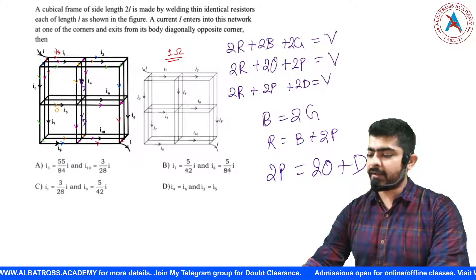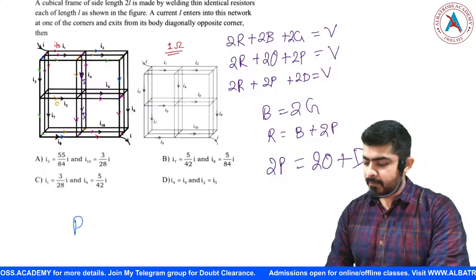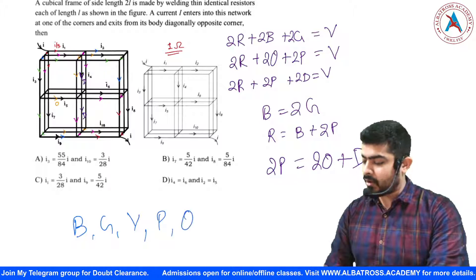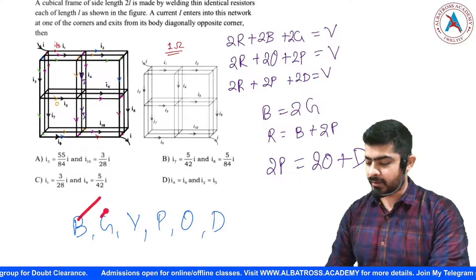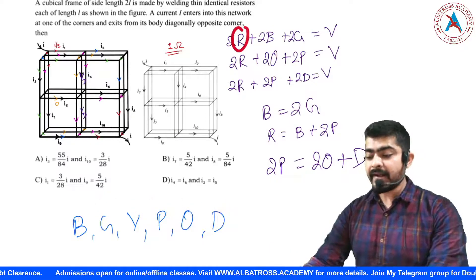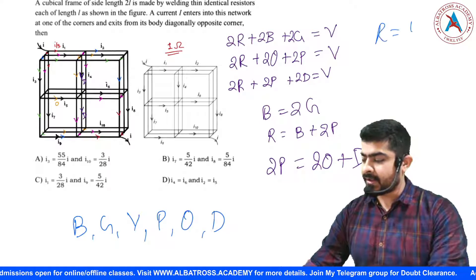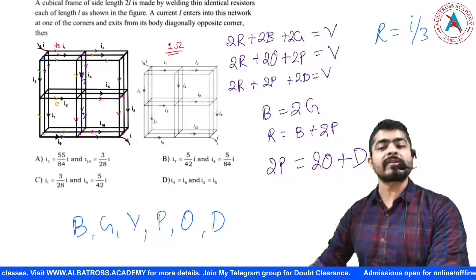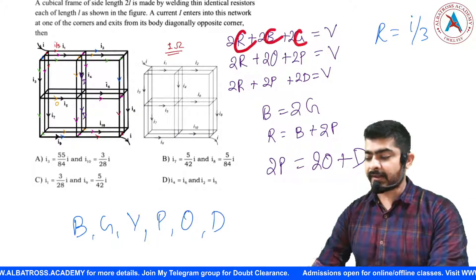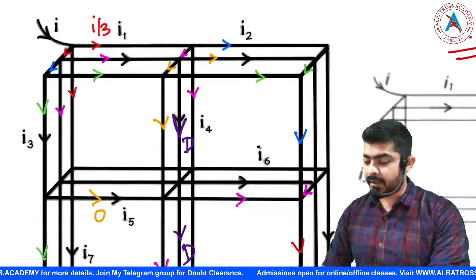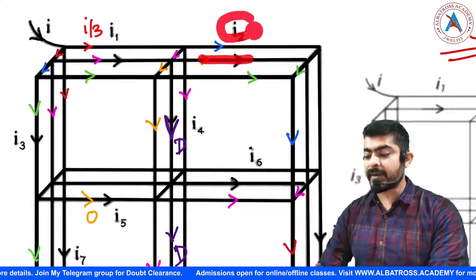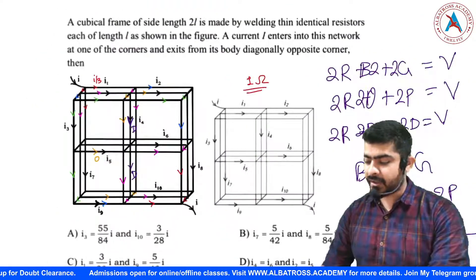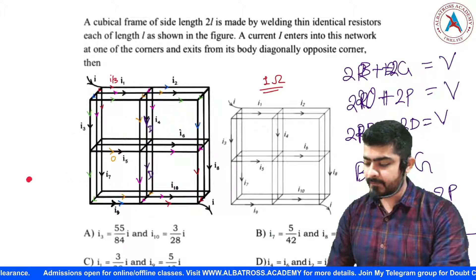The variables are: blue, green, total voltage V, pink, orange, and D — six unknowns. Red is already known to be I/3, so we don't need to solve for it. Solving these six equations gives the value of each color, which maps to the corresponding current: pink = i1, orange = i2, green = i3, D = i4, and blue = i9.